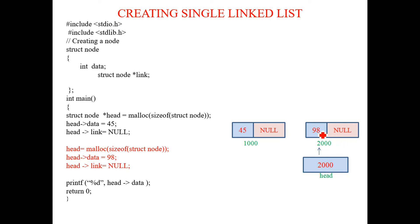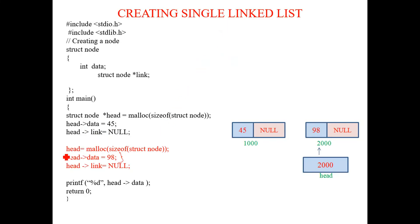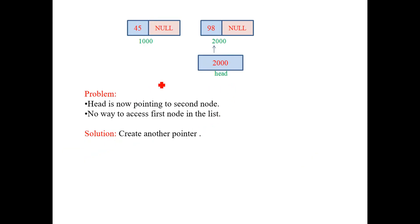To create a second node, we call malloc again and assign data 98 with link null. However, if we store the new address back into head, head now points to the second node and we permanently lose access to the first node. We need a separate pointer to solve this problem.